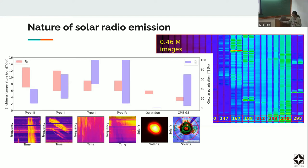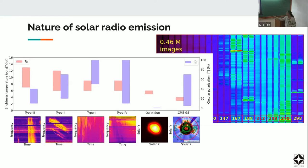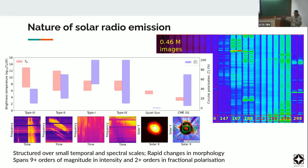These emissions span very large ranges in parameter space. The red boxes indicate brightness temperatures — how hot a body would be if it were radiating like a blackbody — and the blue boxes show fractional circular polarization. It goes from around 10^15 down to 10^4 in brightness temperature, that's 11 orders of magnitude, and about two orders of magnitude in circular polarization. So this emission is structured over a large range of temporal and spectral scales, shows rapid changes in morphology, nine orders of magnitude in intensity, and two orders of magnitude in fractional polarization.